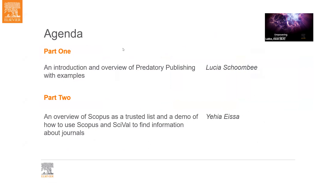Our agenda for the day will be broken up in two parts. First, an introduction and overview of predatory publishing with some examples by Lucia Skumbi, and second, an overview of Scopus as a trusted list and a demo of how to use Scopus and SciVal to find information about journals by Yahya Aysa.